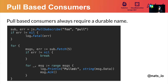You always require a durable name for pull subscribers. In this case, you create a pull subscriber on Foo using the durable name 'pull'. It's a simple for loop that fetches five messages at a time, quickly getting a set of five messages if any are ready. Otherwise it will wait a bit before retrying, and in this case, eventually giving up.